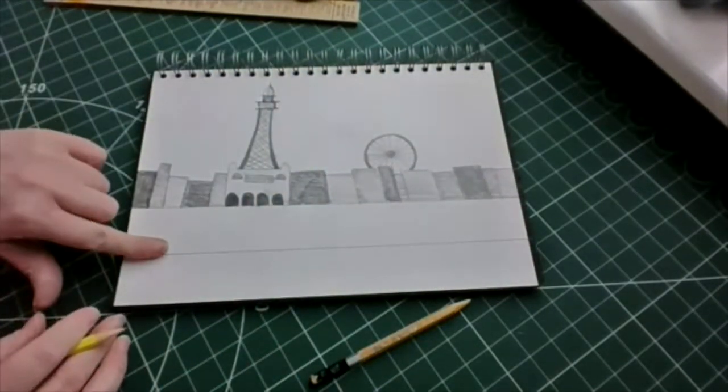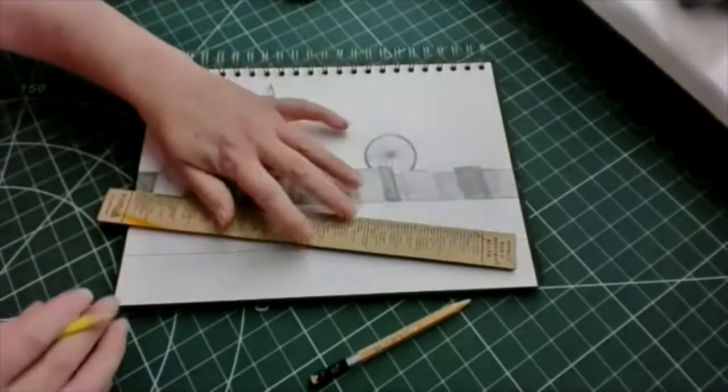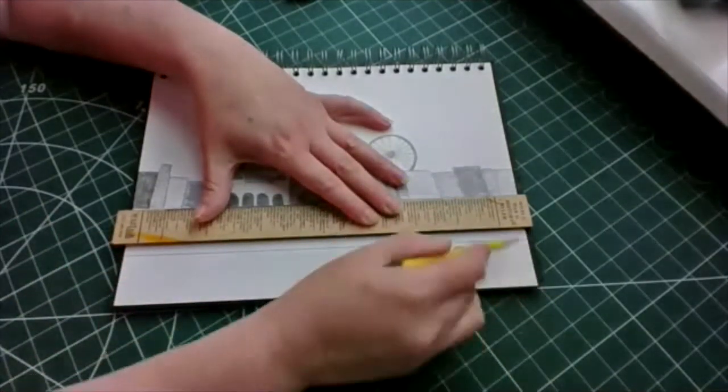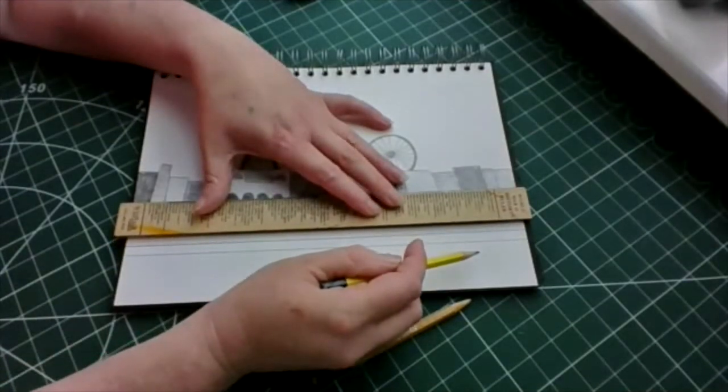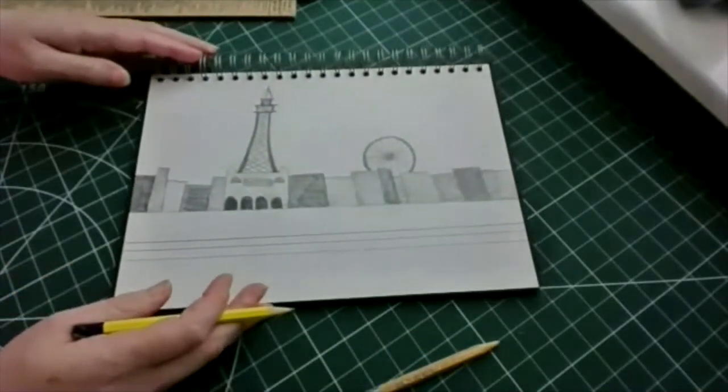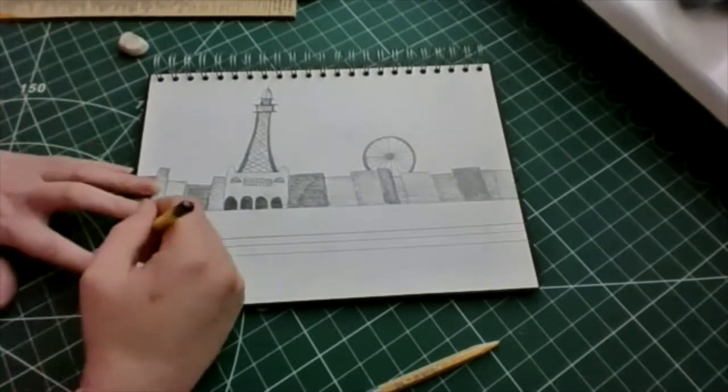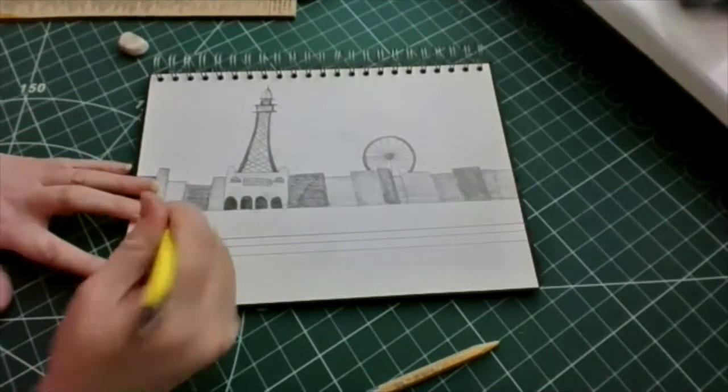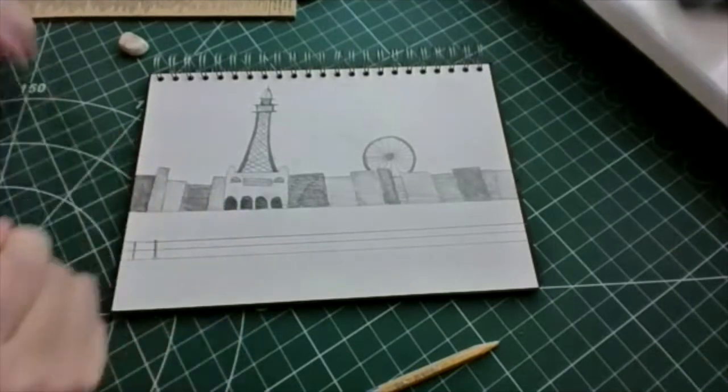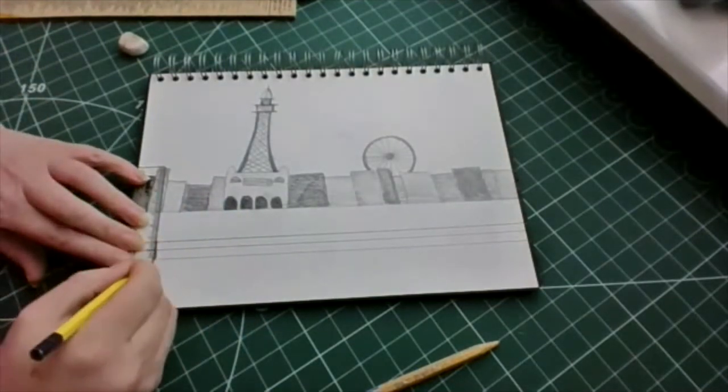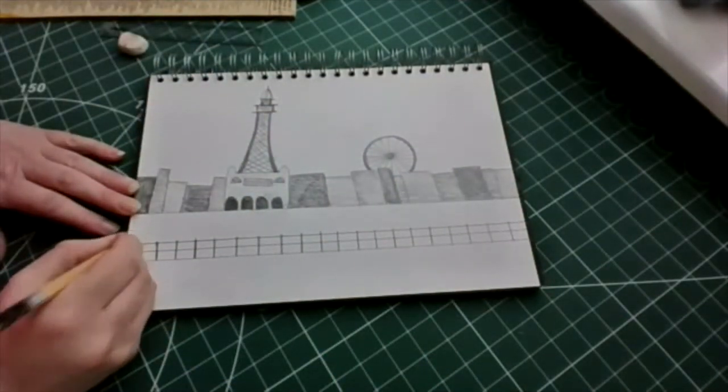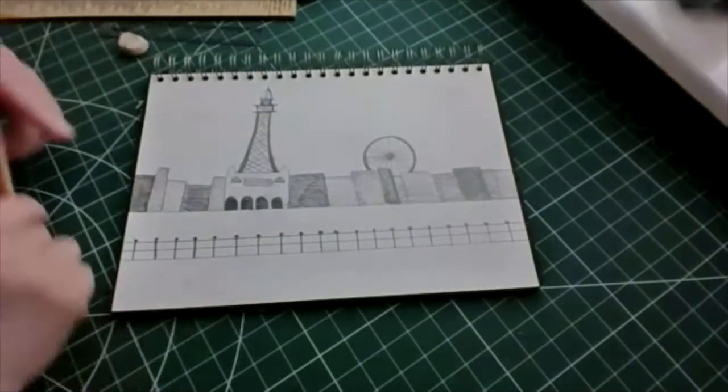So now we need the railings. Now we've gone all the way across there, and now we need to go as evenly as you can. It's a little bit difficult because it's on the sideways. Okay, now these would have had little blobs on top, only little ones, there we go.